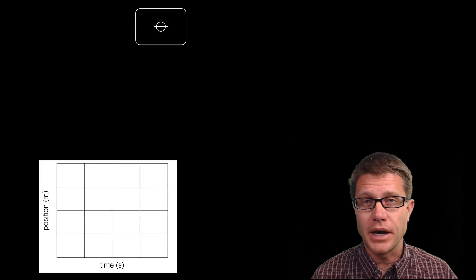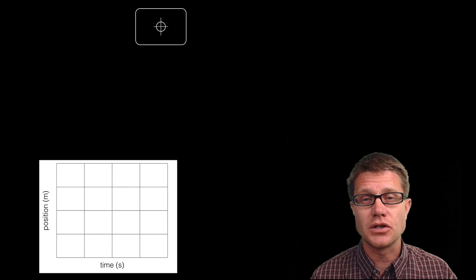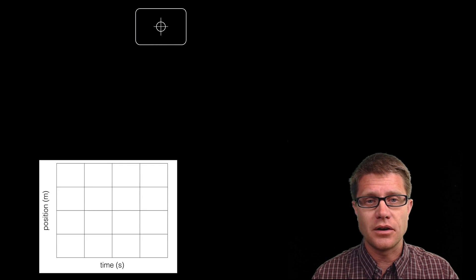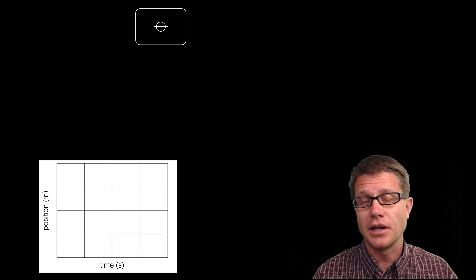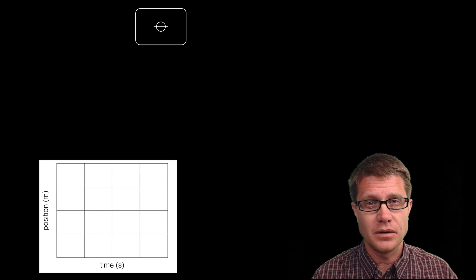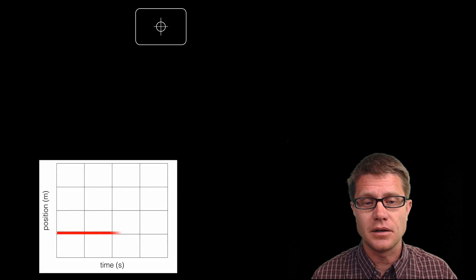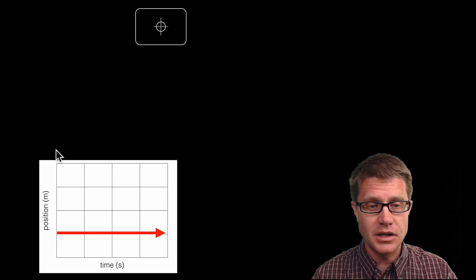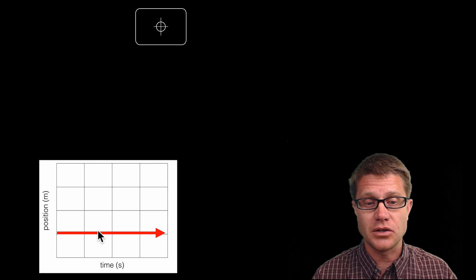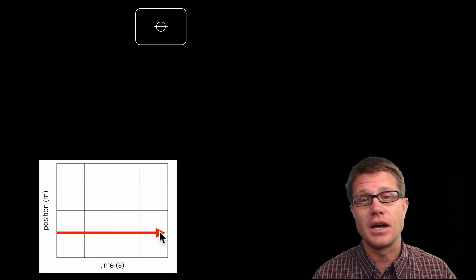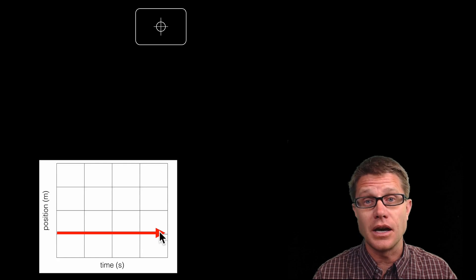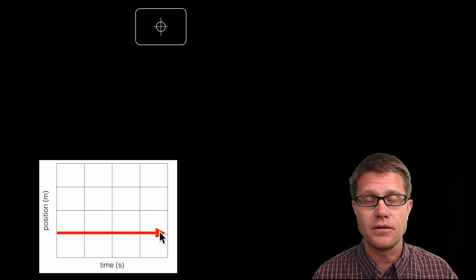One thing you should be able to do right away is look at a position versus time graph and figure out if acceleration is occurring or not. Here I have an object with its center of mass marked in the middle. This object is not moving, so what would the position versus time graph look like? It is going to be a straight horizontal line that has no slope. Because it has no velocity it has no speed, and since there is no change in velocity there is no net force.